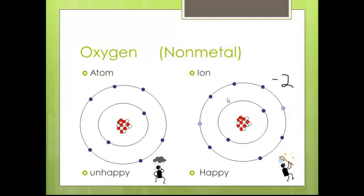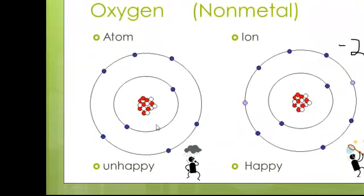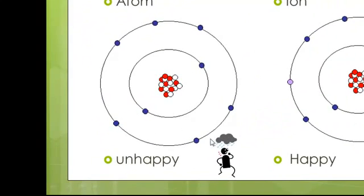Oxygen. We're going to use oxygen to represent our nonmetal. The oxygen is unhappy. His day is getting rained on. His outer shell has six: one, two, three, four, five, six electrons. A long ways from being happy. It needs two more electrons.